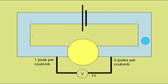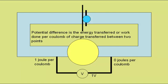The charge then goes back to collect more energy. So the potential difference can be defined as the energy transferred or work done per coulomb of charge transferred between two points.